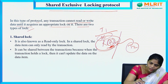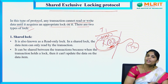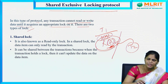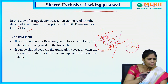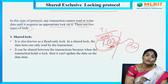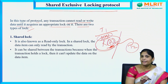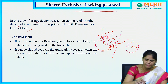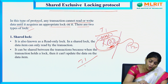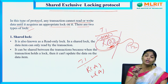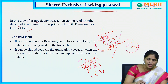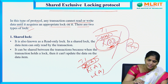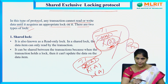A shared lock is acquired for reading a data item. To read and write a data item, we acquire an exclusive lock. So if I want to perform both read and write operations, I acquire an exclusive lock. Acquiring locks depends upon the compatibility function, which will be discussed in a further session. Before that, we are discussing shared and exclusive locking protocol: any transaction wanting to perform any operation must first acquire either a shared lock or an exclusive lock.